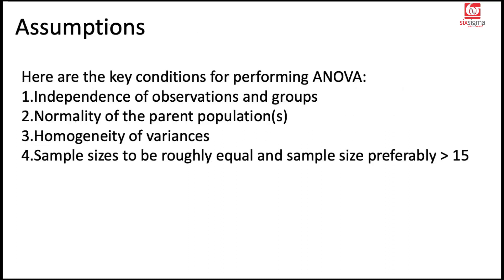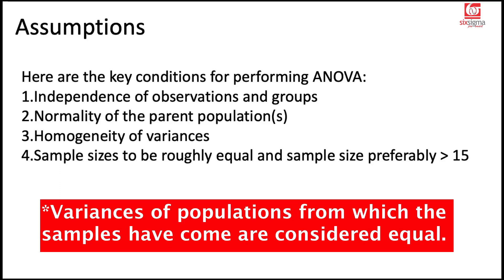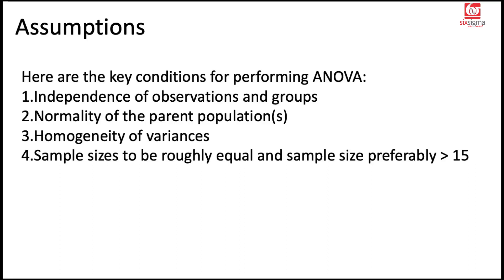What are these assumptions? Number one, independence of observations. Within a group, if you have observations, they are supposed to be independent of each other. Plus the groups are also supposed to be independent of each other. Second is normality of the parent population. We'll have multiple samples that we'll be looking at. Each of the samples would be assumed to have come from a population that's normally distributed. Third is homogeneity of variances. This is about whether the variances of the samples are equal or not. And the fourth assumption, which is more of a practical requirement, is that the sample sizes should be roughly equal and preferably greater than 50.